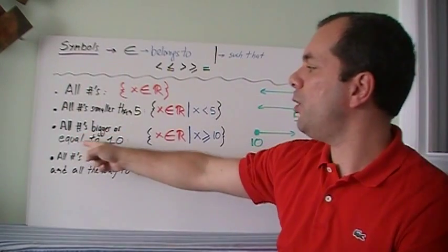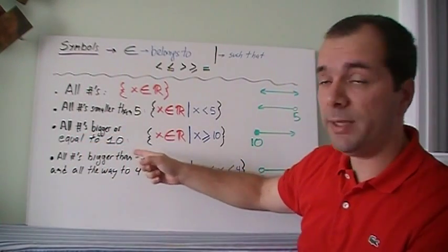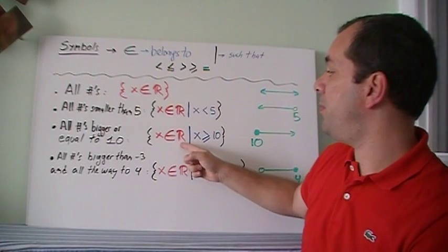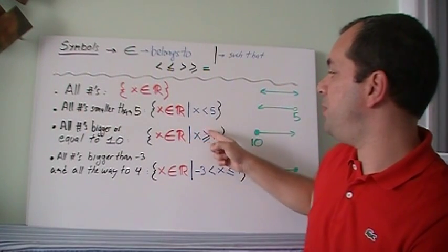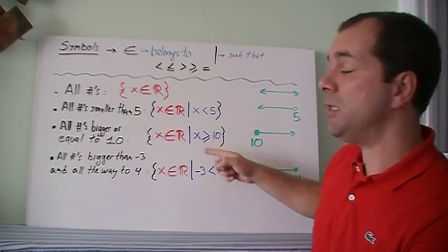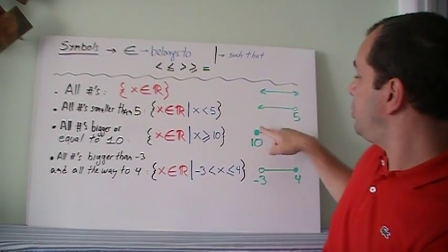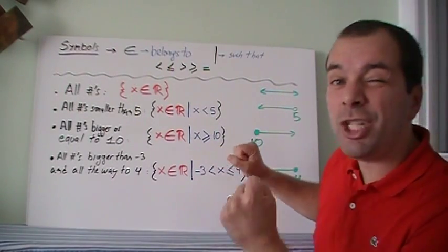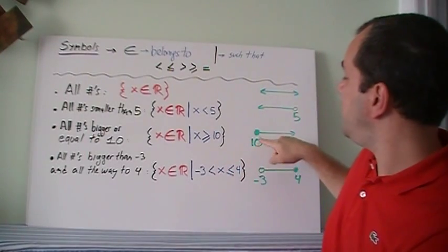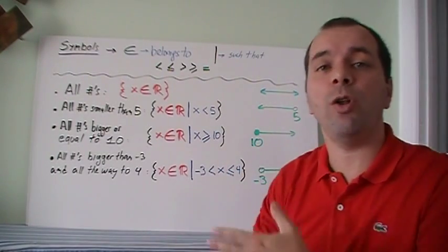And next one. All numbers bigger or equal to 10. All numbers, that means x belongs to the real numbers, such that x is bigger than or equal to 10. That makes sense. And we use this. So we use a solid dot, because it reaches 10. So it can be equal to 10. So 10 aligned to the right side, showing all the numbers that are above it.